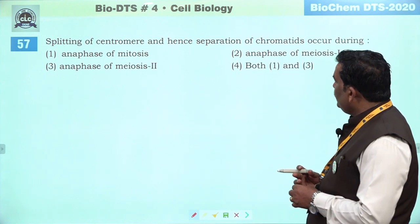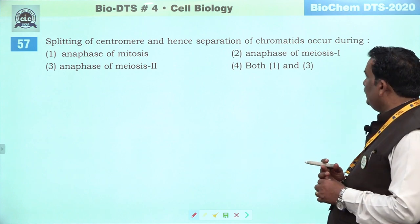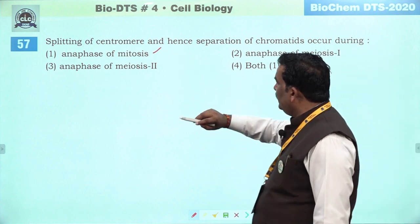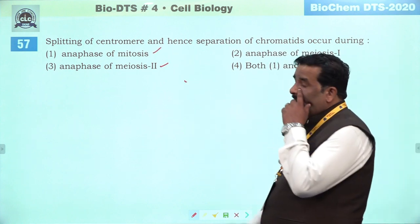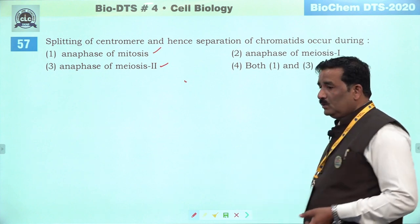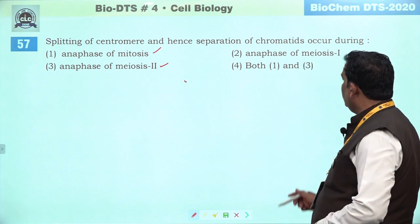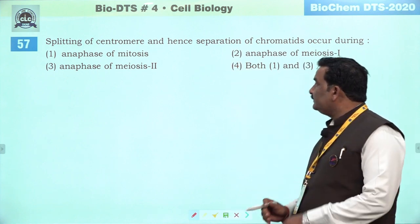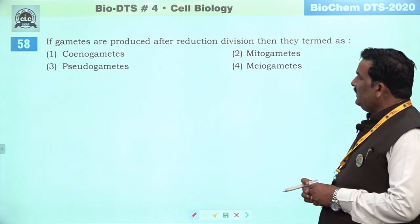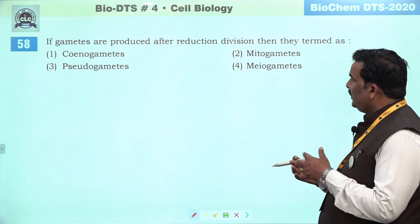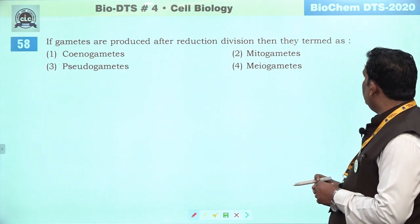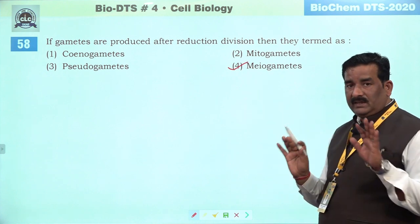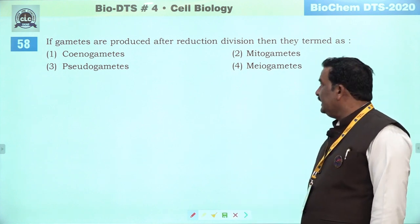Next question: splitting of centromere and hence separation of chromatids occurs during. Anaphase of mitosis mein centromere replicate hote hain. Anaphase second mein bhi centromere replicate hote hain, tabhi jo chromosome hain woh separate hote hain. Fourth is the right answer — first and third. Next question: if the gametes are produced after the reduction division then they are termed as — meiogametes kahlayenge. Fourth is the right answer.